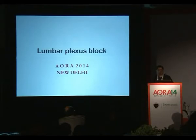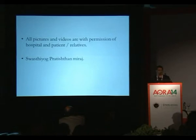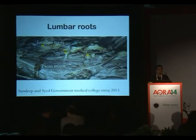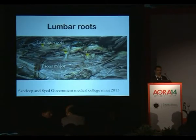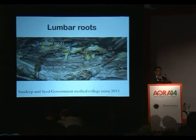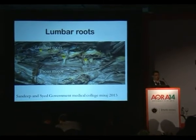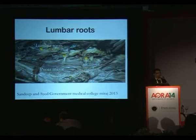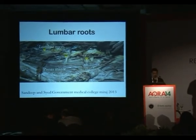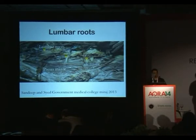We deal with lumbar plexus blocks or the psoas compartment blocks. I conduct routine cadaveric dissections. The anatomists don't perform these lumbar plexus dissections, so it's a boon to us — I routinely perform this once every six months. The yellow structures are the lumbar roots, which emerge from the foramen and then travel through the psoas muscle. On the posterior aspect, the psoas major muscle has been reflected to show the roots, which intermingle with each other from L1 to L4.